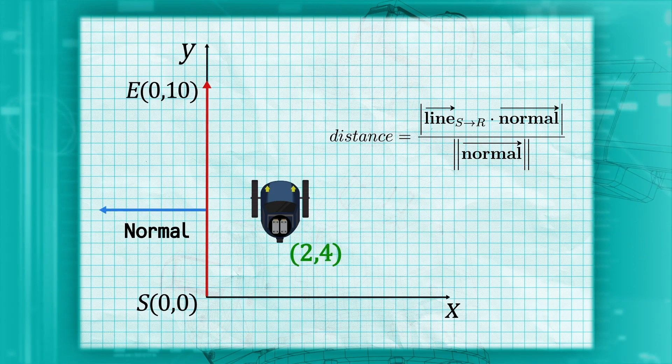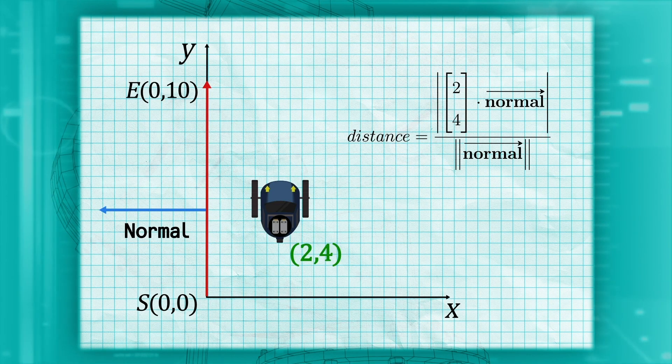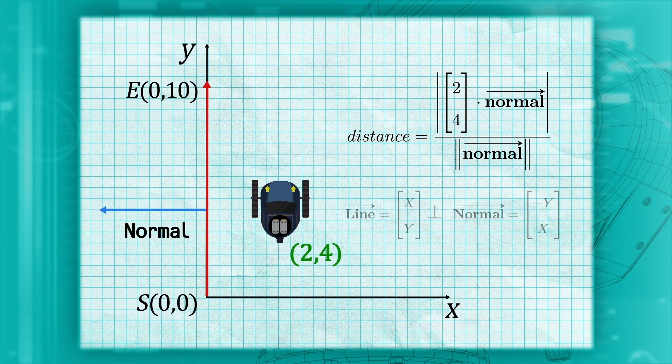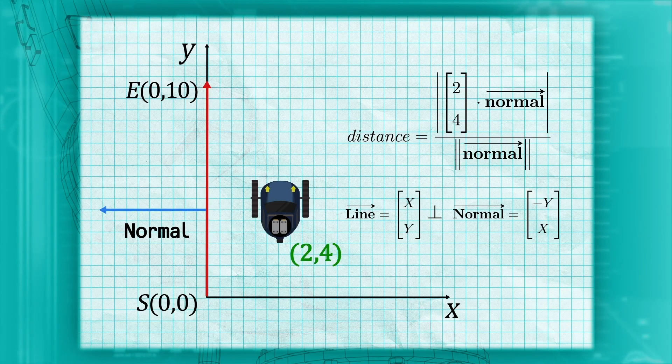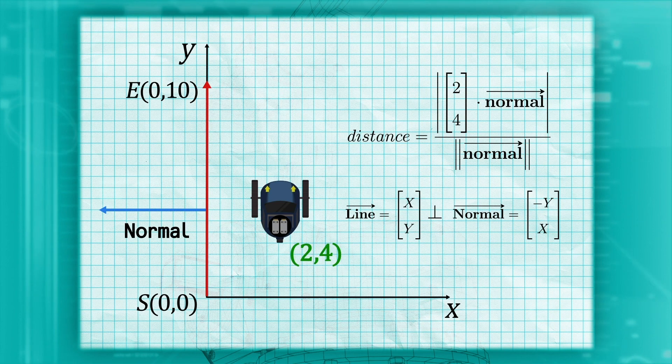Now, the second thing we need is the normal, a line perpendicular to our original trajectory line. This is easy to generate with the vector. If you swap the top and bottom elements and negate one of the terms, it is always perpendicular to the original line.